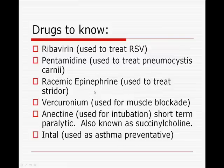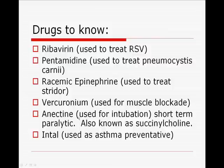A quick drug review: ribavirin is used to treat respiratory syncytial virus in pediatrics using a SPAG device. Pentamidine is typically aerosolized for AIDS patients and used to treat Pneumocystis carinii pneumonia. Racemic epinephrine is used to treat stridor. Vecuronium is used for muscle blockade — essentially paralyzing someone on the ventilator. Anectine is a short-term paralytic — three to five minutes — used primarily for intubation, also known as succinylcholine. Intal is used as an asthma preventative, also known as cromolyn sodium.